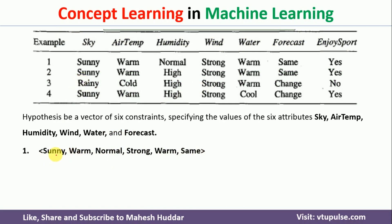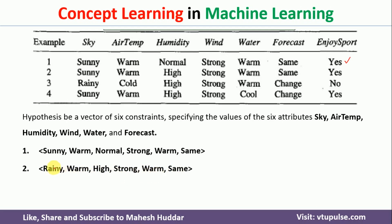This hypothesis matches exactly the first instance, classifying it as yes — and the expected is also yes. But for the second example, sunny and warm match, but normal and high do not match. No match means it will be classified as no, but what is expected is yes. So this cannot represent all examples. Considering another hypothesis — rainy, warm, high, strong, warm, same — rainy will not match sunny, so it is classified as no, but the expected is yes. Again, this cannot represent all examples. All these hypotheses fail, and the same process must continue until we find a solution — a very tedious task.